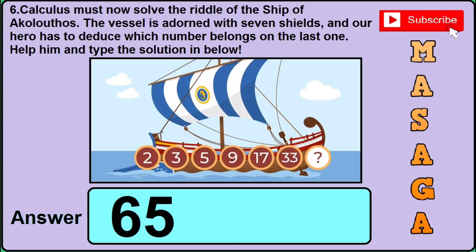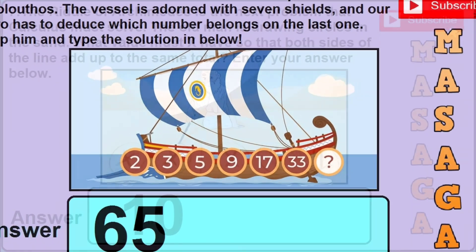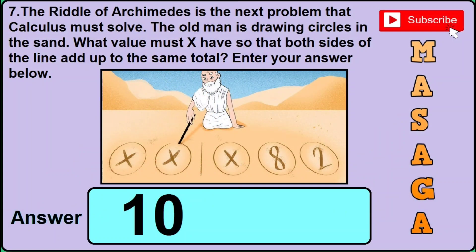Now in version 4 of this question, it is written here 2, 3, 5, 9, 17, 33, question mark in the image. Then the correct answer would be 65, so you need to type 65 in the answer box.